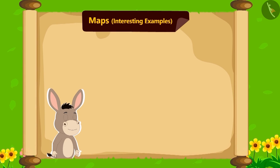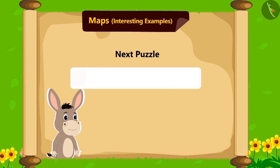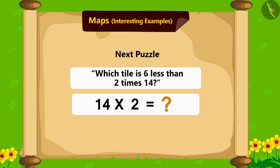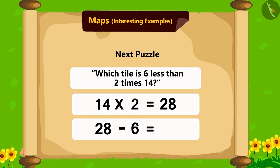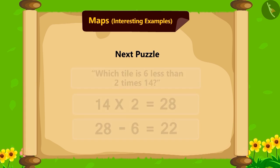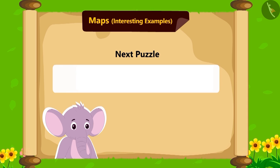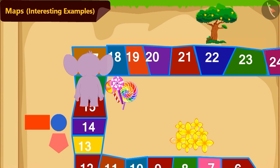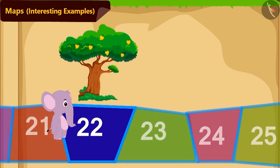Come on children, let's see what is Bhola's next puzzle. Which tile is 6 less than 2 times 14? Appu became worried after hearing this puzzle. Can you solve this puzzle for Appu? If we multiply 14 with 2, we get 28. Now, subtracting 6 from 28 is 22. So, 6 less than 2 times 14 is tile number 22. With your help, Appu has quickly moved to tile number 22.